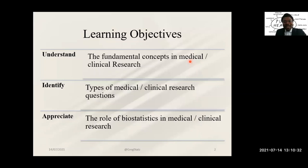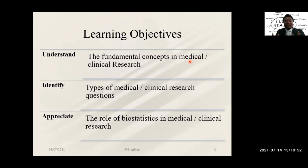The learning objectives for today's particular lecture are going to be simple and straightforward. We want to be able to understand the fundamental concepts in medical and clinical research. We should be able to identify types of medical and clinical research questions. And lastly, we should appreciate the role of biostatistics and statistics as a whole in medical and clinical research.